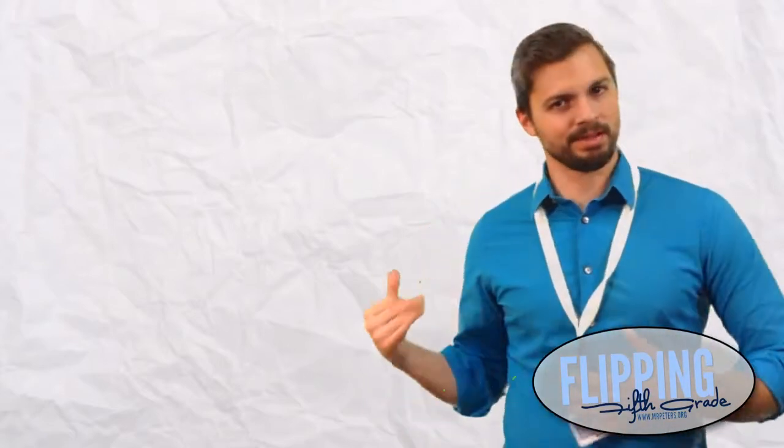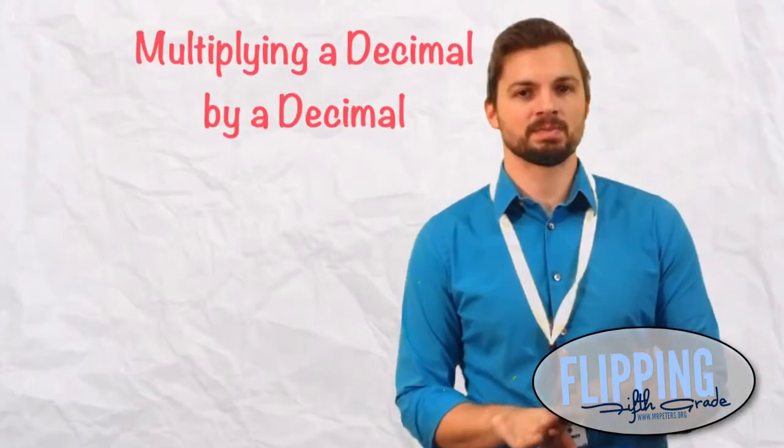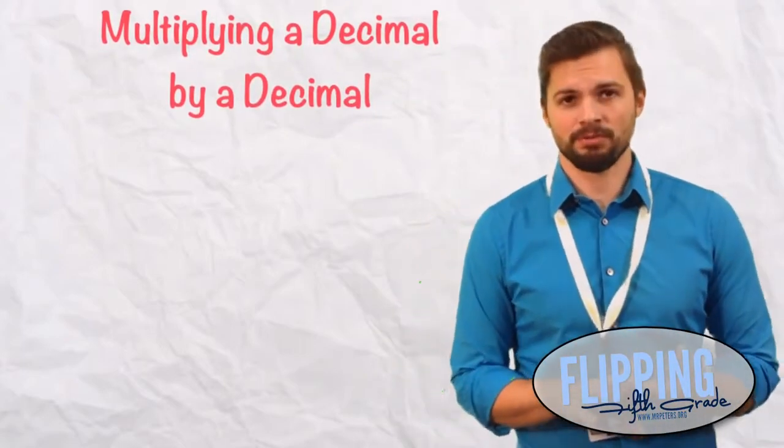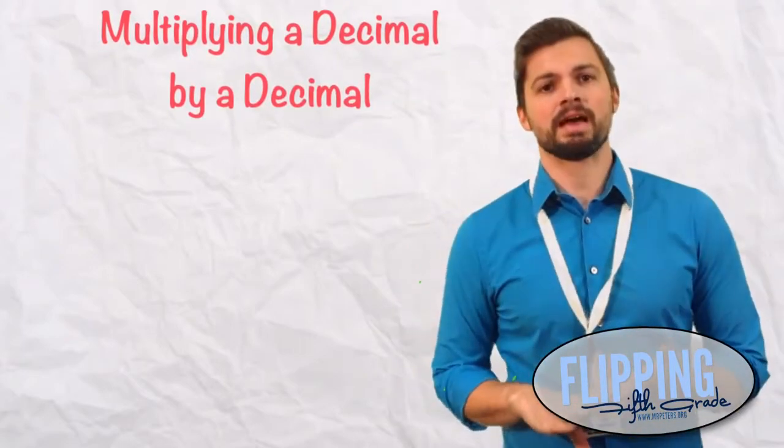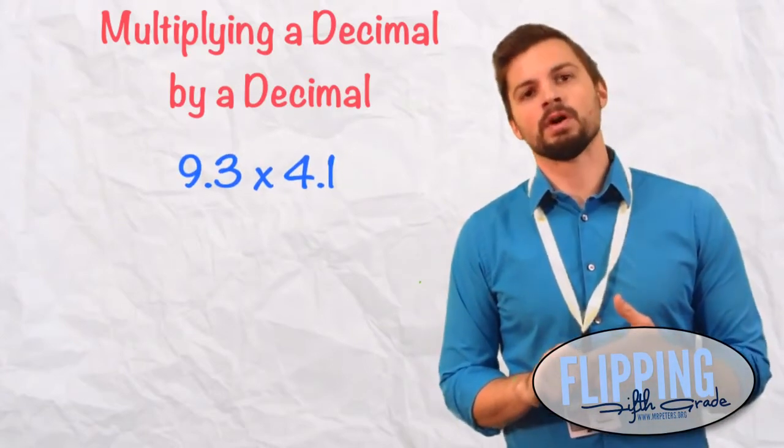Okay, for this next lesson, we're going to kind of piggyback what we did last time. But this time, we're going to take a decimal by a decimal. It's really not that much different. There's just one extra step. So let's look at this problem, 9 and 3 tenths times 4 and 1 tenth.